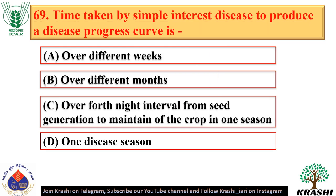Question number 69. Time taken by simple interest disease to produce a disease progress curve is one disease season.